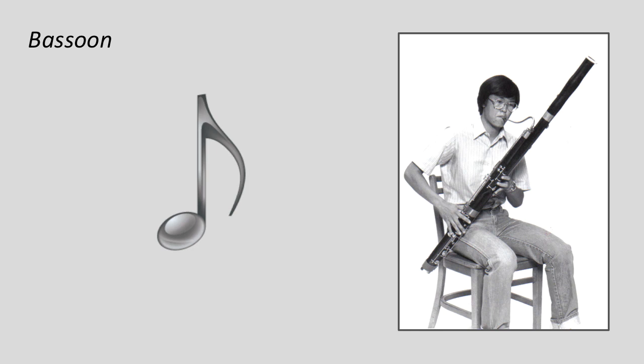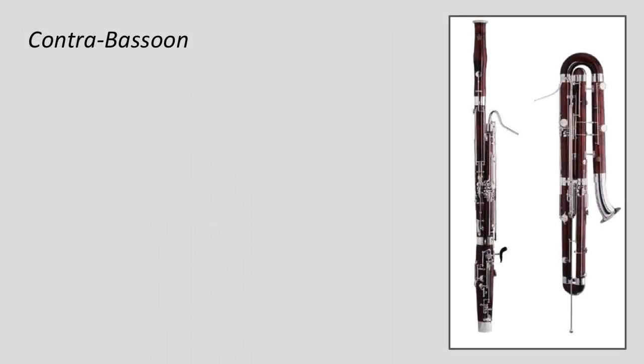Now, as large as the bassoon is, it's not the largest double reed. Add some curves and length, and you've got the contrabassoon. This picture shows how it compares to the bassoon. You can see how it loops back in on itself to add length, and it has a stand for the floor. And of course, the sound is even lower and more bassoon-like — 'bassoonier,' if that makes sense.